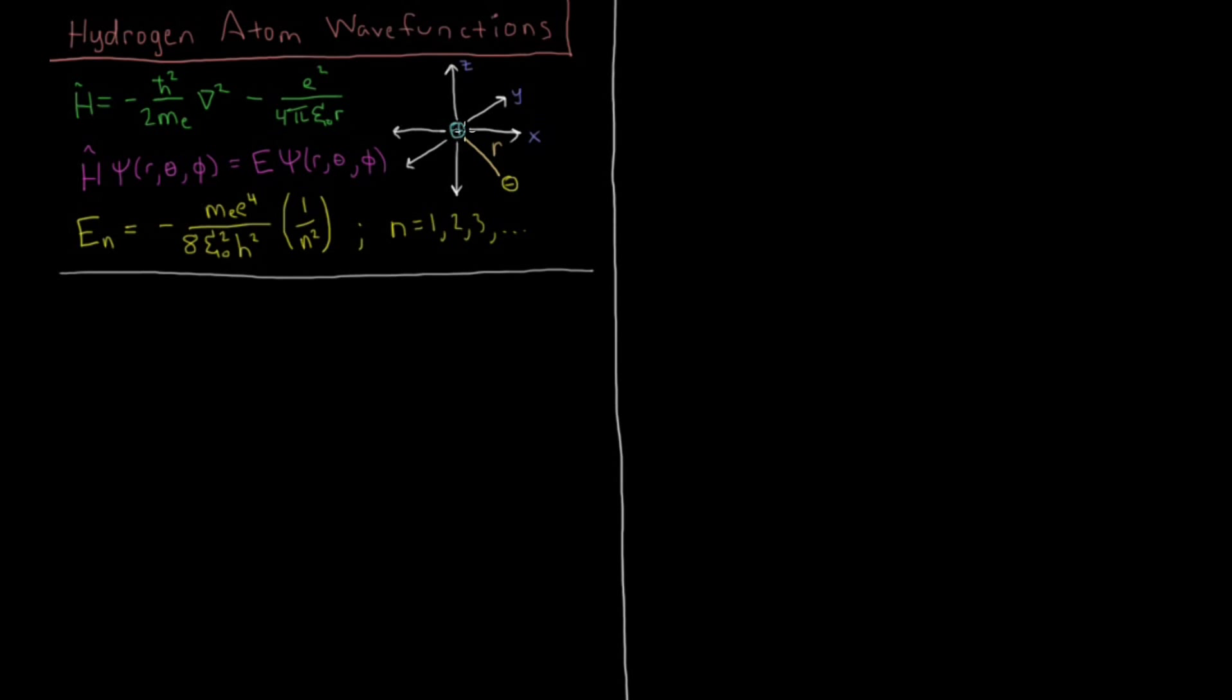Minus the Coulomb force between the electron and a proton fixed at the nucleus, e squared over 4 pi epsilon naught r. That's attractive because they're of opposite charge. And that gives us this Schrödinger equation, that this Hamiltonian h acting on psi of r theta phi, the spherical polar coordinates, equals the energy e times the same psi of r theta phi.